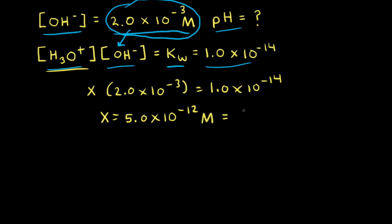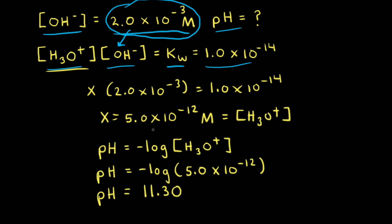Now that we know the concentration of hydronium ions in solution, we can plug that into our equation for pH. The pH is equal to the negative log of 5.0 times 10 to the negative 12, which gives 11.30. Since we have two significant figures for the concentration, we need two decimal places for our final answer.